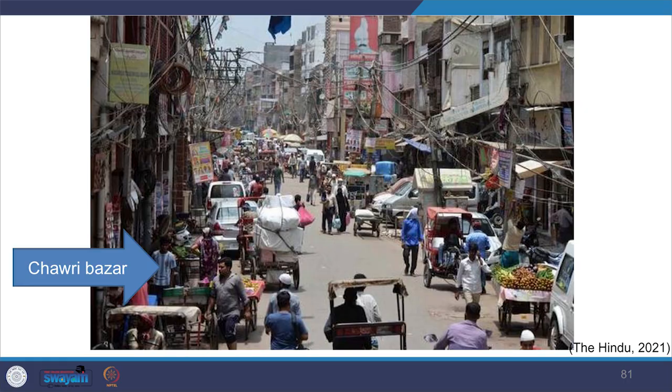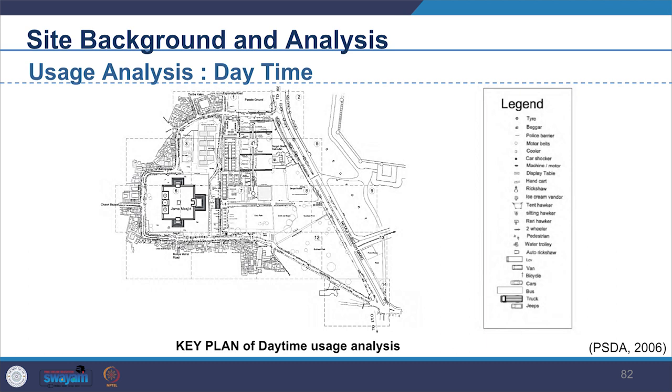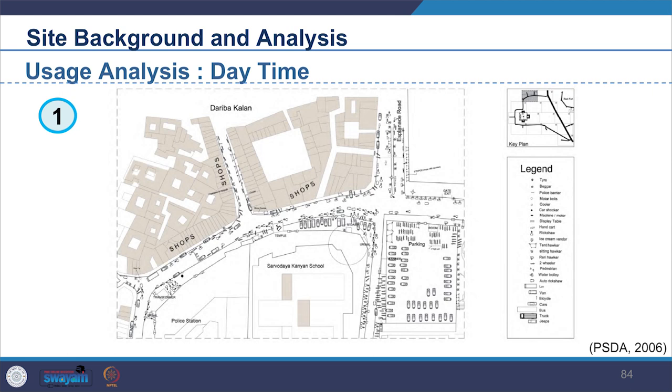A usage analysis was done for daytime for all 14 blocks within the redevelopment master plan area. Detailed mapping was done for types of activities including kinds of shops, workshops, handicrafts, display tables, rickshaws, tent hawkers, sitting hawkers, two-wheelers, pedestrians, water trolleys, auto-rickshaws, vans, bicycles, cars, buses, trucks, and jeeps. Similarly, detailed mapping was also done for nighttime for all 14 blocks, showing how the level of observational detail changes compared to perspective, regional, or development plans.